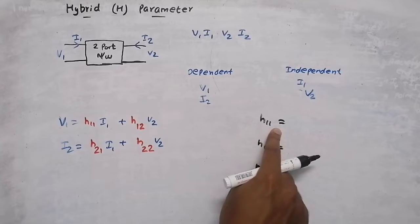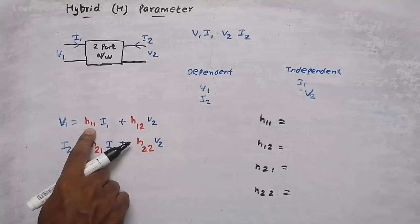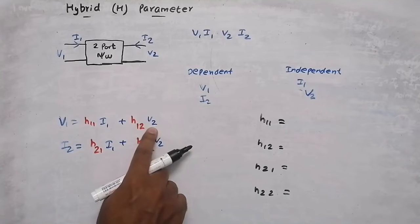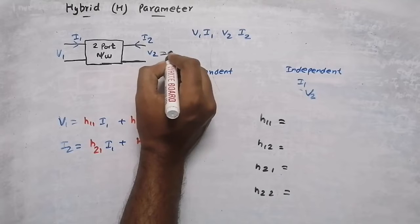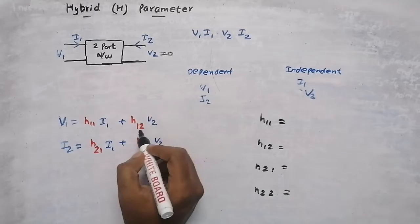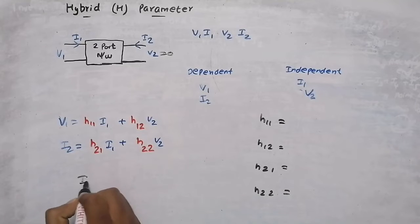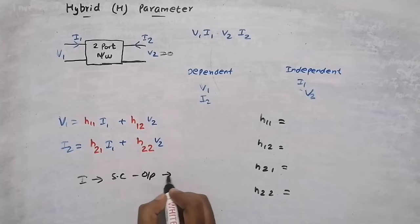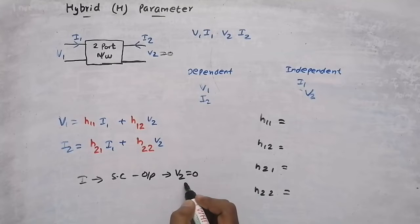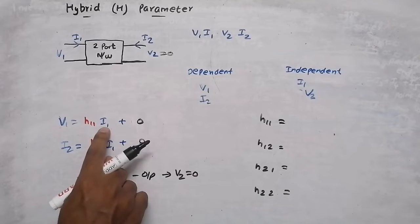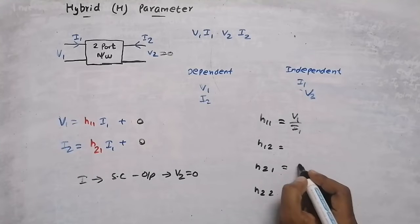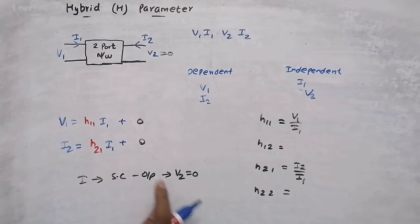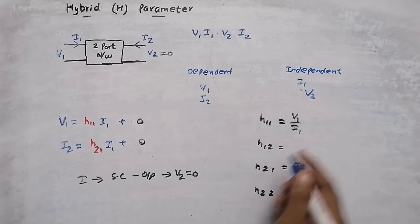For finding h11, v2 should be zero. To get v2 equal to zero, we need to short circuit the output port. When we short circuit the output, v2 equals zero, making the other terms zero. Therefore, h11 equals v1 divided by i1, and h21 equals i2 divided by i1, both under the condition that v2 equals zero.